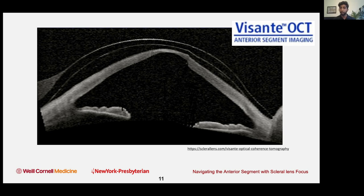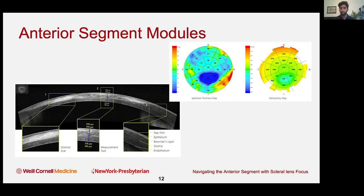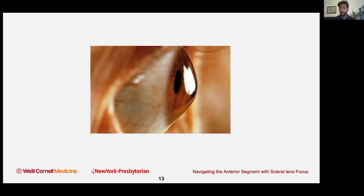There are various forms of anterior segment OCT. One example is the Sante OCT — a separate instrument that takes measurements of the anterior surface. At Weill Cornell we use a lot of Cirrus OCTs across our offices. We just got a brand new Cirrus OCT on our 12th floor, which is primarily plastics and cornea. It has a new anterior segment module that allows placement of a lens on the OCT machine to get anterior segment pictures, geometry measurements, and angles. Heidelberg has similar technology as well.